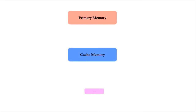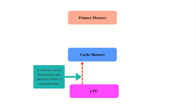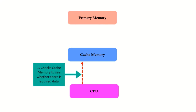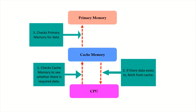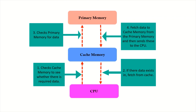How Cache Memory works: The CPU checks Cache Memory to see whether the required data exists. If the data exists, it fetches it from cache. Otherwise, it checks primary memory for the data, fetches that data to cache memory from primary memory, and then sends it to the CPU.